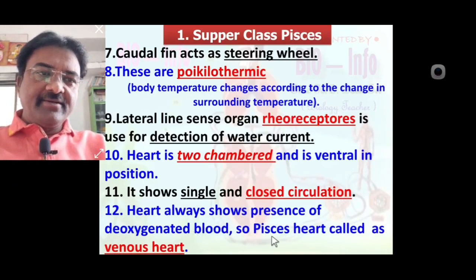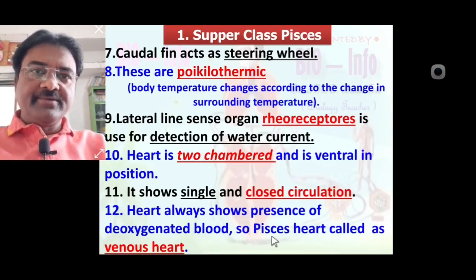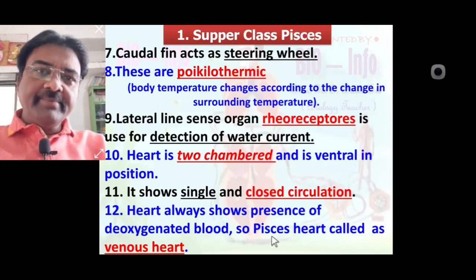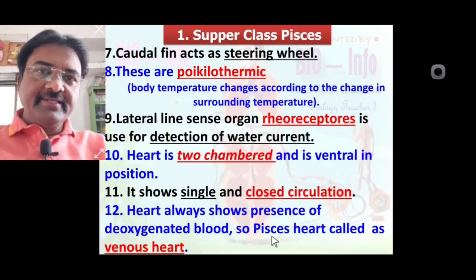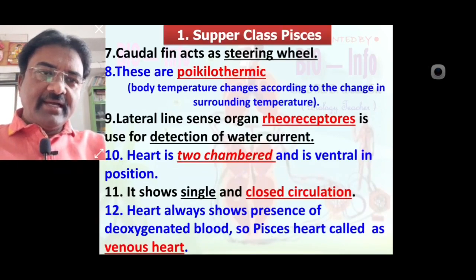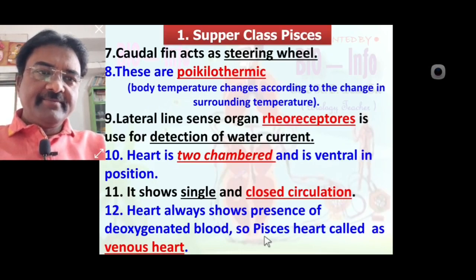The heart of Pisces always contains deoxygenated blood. Hence, the heart of Pisces is called a venous heart. This question is often asked: why is the Pisces heart called a venous heart? Because the heart of Pisces shows deoxygenated blood — hence it is called a venous heart.